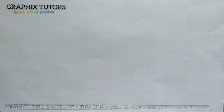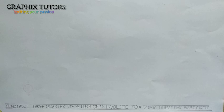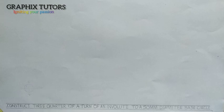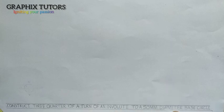Good everyone, my name is Graphics. Today we want to treat an aspect of technical drawing, which is the involute. An involute is a path traced out by a point on a straight line that rolls around a circle. The question we are treating now is: construct three-quarters of an involute to a 50 millimeter diameter base circle.